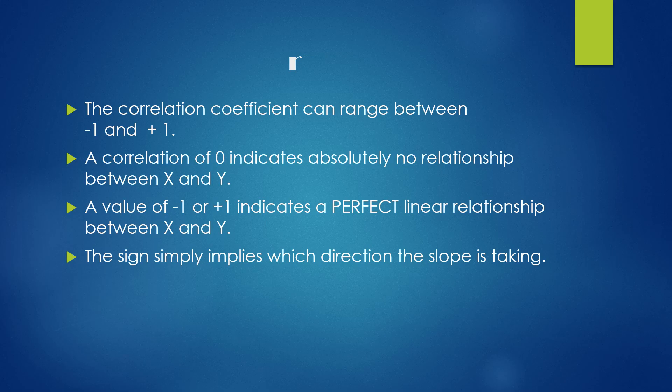These are the rules of correlation. R is the symbol for a correlation coefficient. It can range between negative 1 and positive 1. A correlation coefficient of 0 indicates absolutely no relationship between x and y. A value of negative 1 or positive 1 would indicate a perfect linear relationship. The sign, again, just implies the direction the slope is taking.